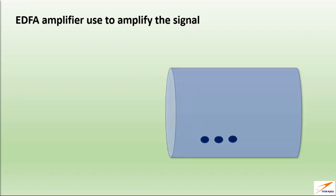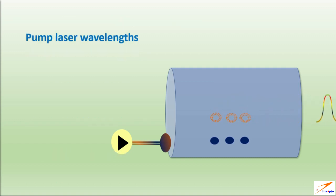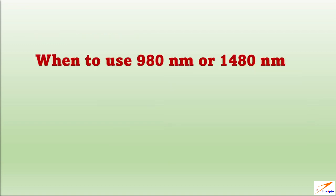In last video we covered EDF amplifier used to amplify the signal with erbium ions. Video link you can find in description. To excite the ions need pump laser at specific wavelengths. We are using two pump wavelengths in EDFA. One is 980 nanometer and second is 1480 nanometer. So the question is when to use which wavelength amplifier, or what's the difference in using them?